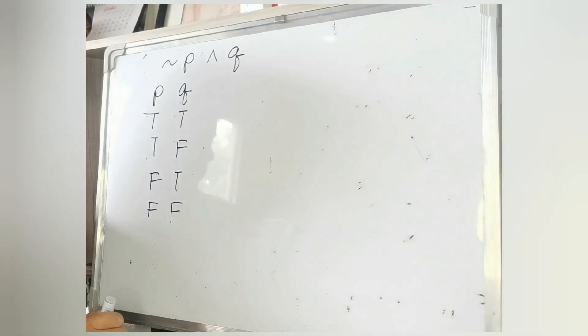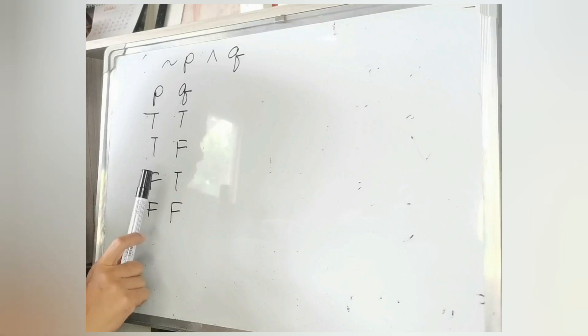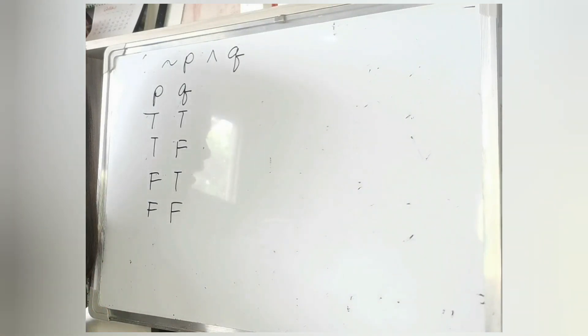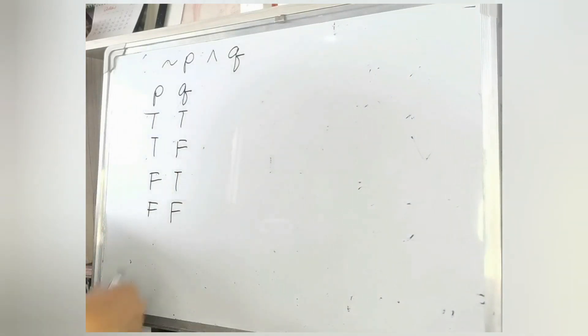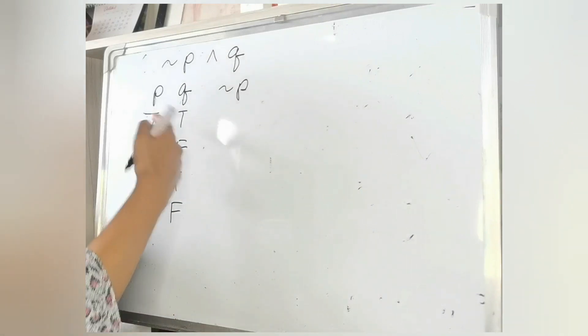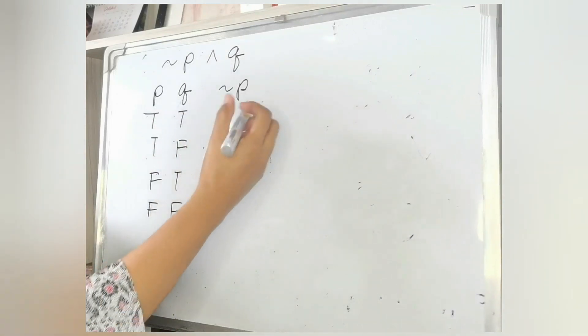Now let's construct the truth table for 'not P and Q.' We have two statements involved, P and Q, which is why we have four possible combinations of truth values: true-true, true-false, false-true, and false-false. Next, we evaluate the negation of P and create a column for that. All we have to do is write the opposite of the given truth values for P.